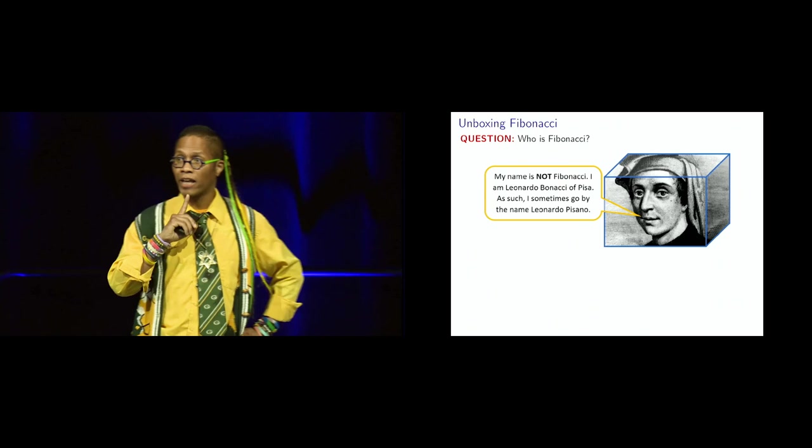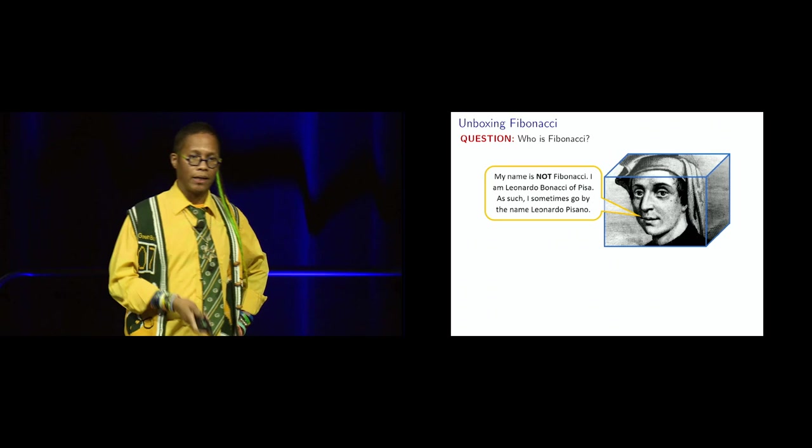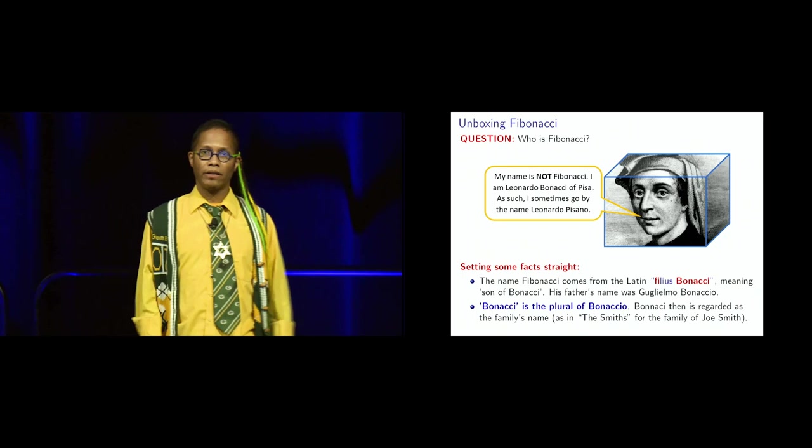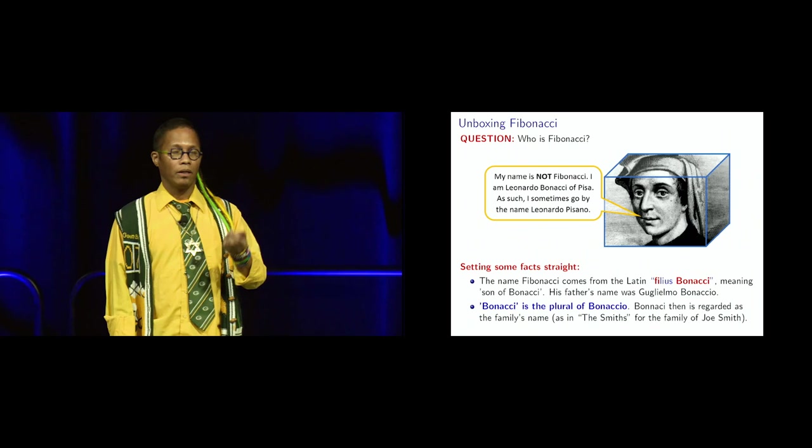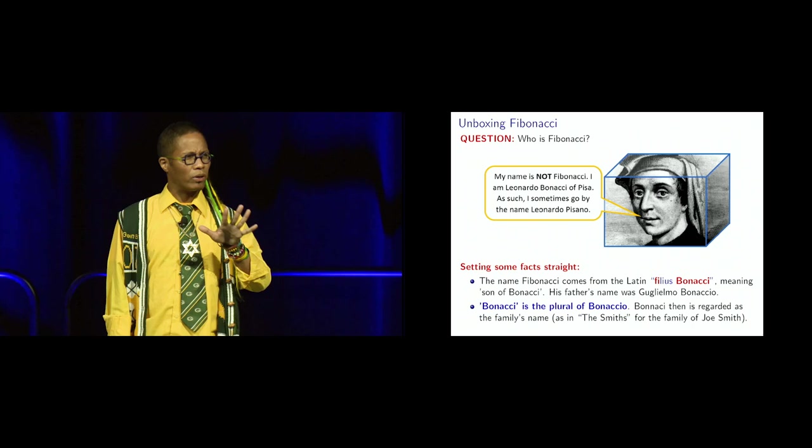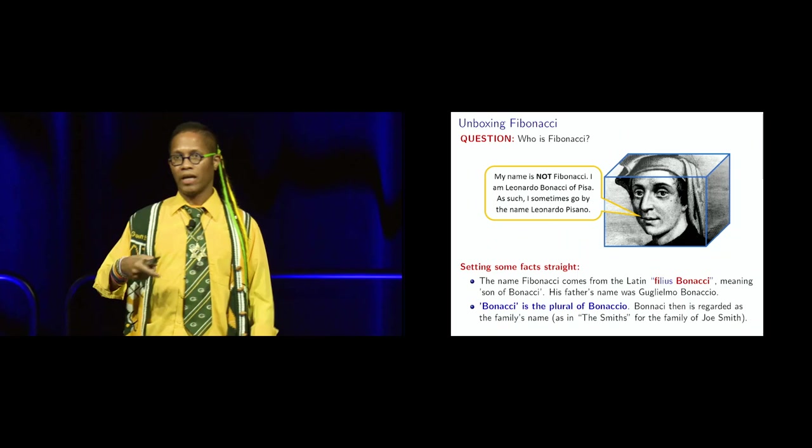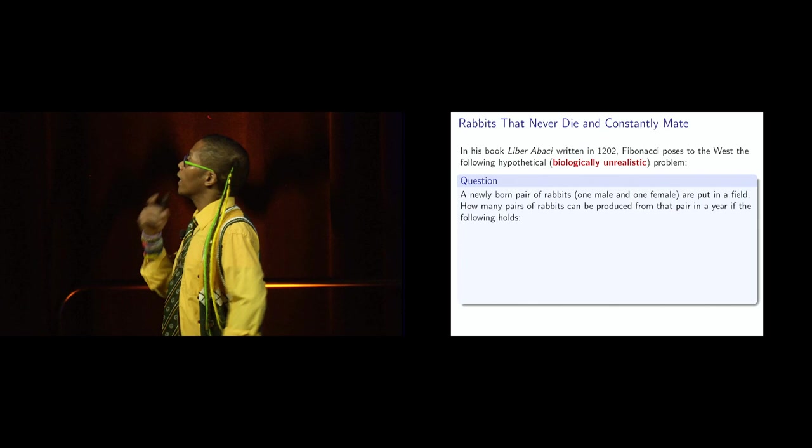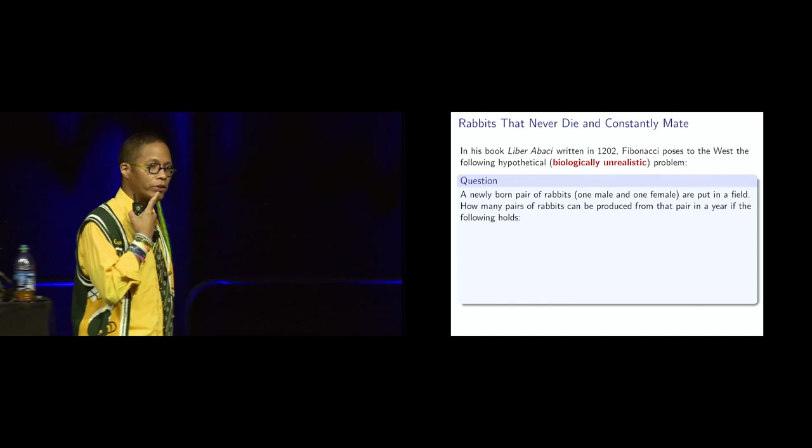First of all, there is nobody who ever walked the earth whose name is Fibonacci. Let's set that straight, all right? Cool. He was Leonardo Bonacci of Pisa, and we sometimes go by Leonardo Pisano, like from Pisa. And, setting some facts straight, why do people, lie and think that Fibonacci is actually a person? Well, it's from the Latin Filius Bonacci, son of Bonacci. His dad, his family's name is Bonacci, and Bonacci is plural, so it's like saying in the States, like saying the Smiths, like we pluralize that name because he's part of the Bonacchis, you know, the son of Bonacci. So, that's where we go. That's why Leonardo is called Fibonacci, and I'll call him Fibonacci. Okay, so,